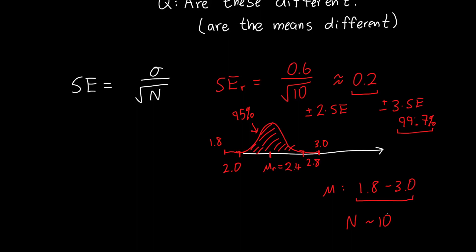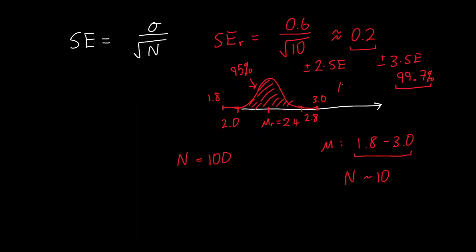If we increased the number of patients that we had, so say we had n equal to 100 patients and we got the same standard deviation, then our standard error would shrink. If this graph is for n equals 10, we can draw one for n equals 100.